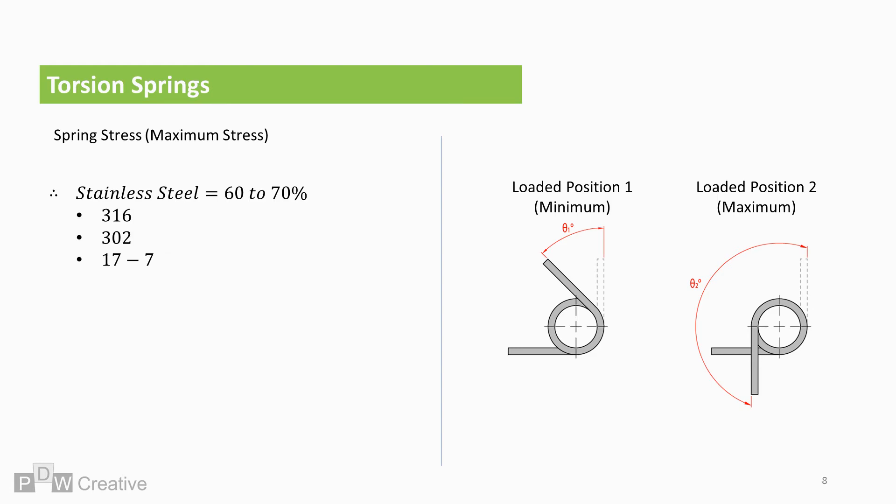Stainless steels used for spring wire can in many cases be loaded up until 60% of the material tensile limit, and in some design scenarios, 70% of the tensile limit may be acceptable. Stainless spring steel grades in this category include 316, 302 and 17-7.